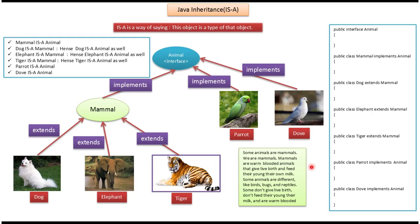Some animals are mammals — we are mammals. Mammals are warm-blooded animals that give live birth and feed their young their own milk. Some animals are different, like birds, bugs, and reptiles — they don't give live birth and they don't feed their young their own milk.